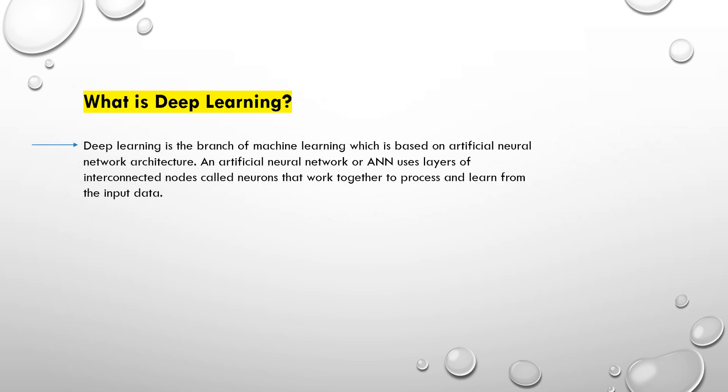What is deep learning? Deep learning is a branch of machine learning which is based on artificial neural network architecture. Artificial neural networks (ANN) use layers of interconnected nodes called neurons that work together to process and learn from the input data.